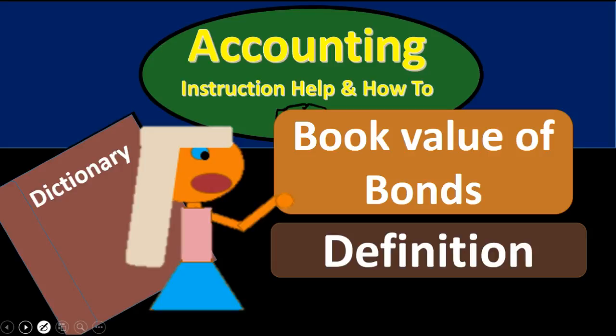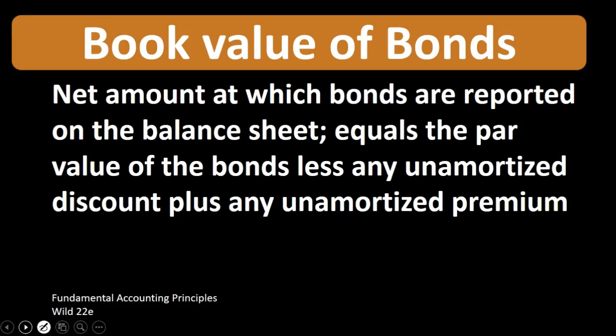In this lecture we will define book value of bonds. According to Fundamental Accounting Principles, WILD 22nd edition, the definition of book value of bonds is the net amount at which bonds are reported on the balance sheet, equal to par value of the bonds less any unamortized discount plus any unamortized premium. When considering the book value of the bonds, we are looking at the value reported on the balance sheet net of the premium or discount.